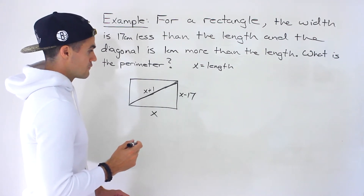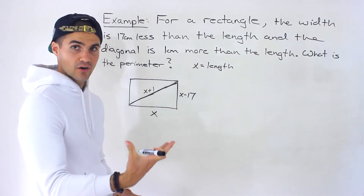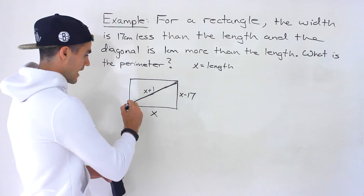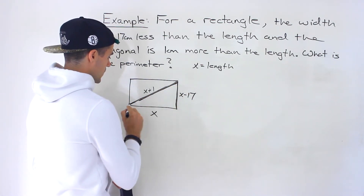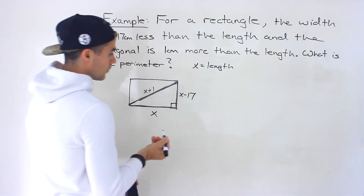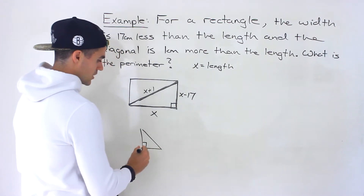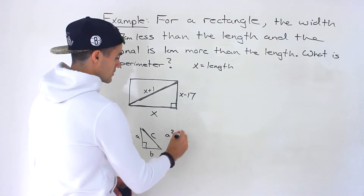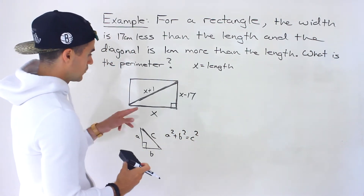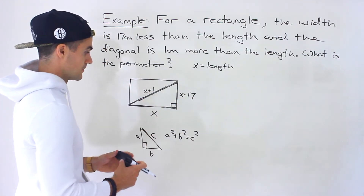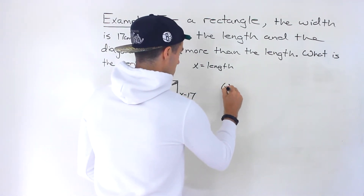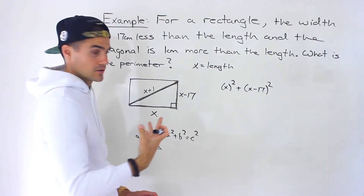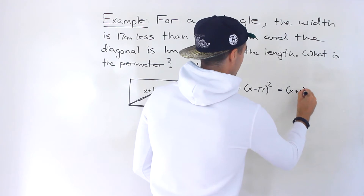We have these different lengths in terms of variable x, and we want to relate them and solve for x. Notice that we are dealing with a right triangle here. As we know, for a right triangle with sides a, b, and hypotenuse c, Pythagoras' theorem holds. So we can relate all of these: x squared plus (x minus 17) squared equals the hypotenuse squared, which is (x plus 1) squared.